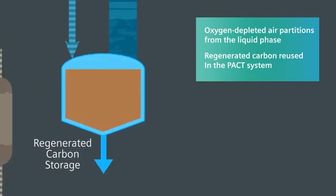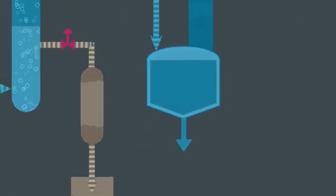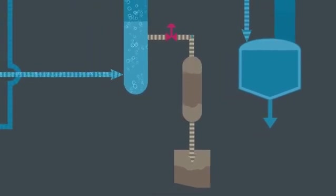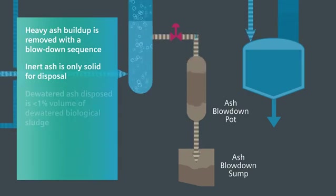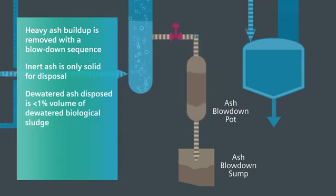Periodically, a portion of the heavy ash that builds up in the reactor is removed via a blowdown sequence, collected and dewatered. This inert ash blowdown is the only source of solids for disposal, and the dewatered ash is typically less than 1% of the volume of dewatered biological sludge, a significant cost savings for plant operators using landfilling or other methods of solid waste disposal.